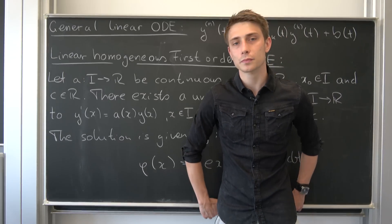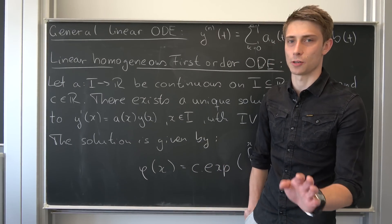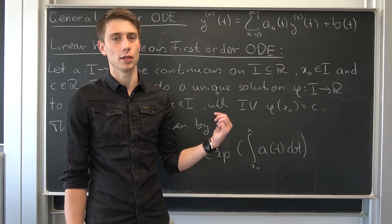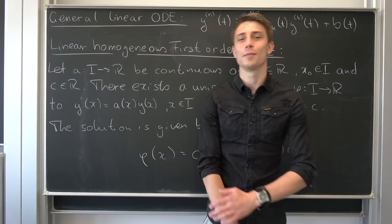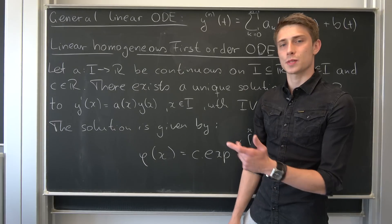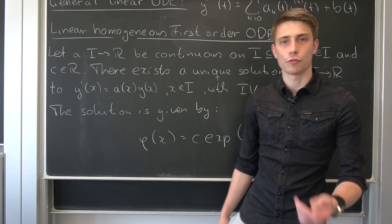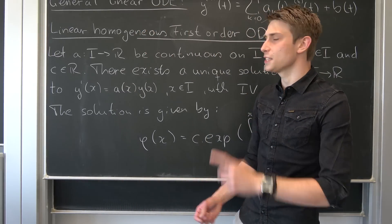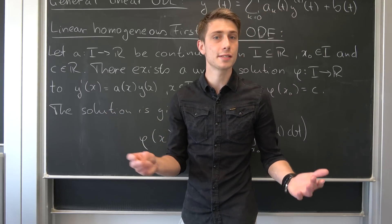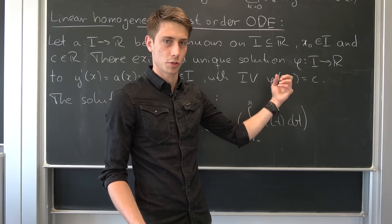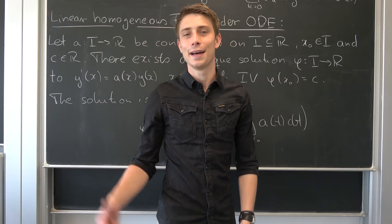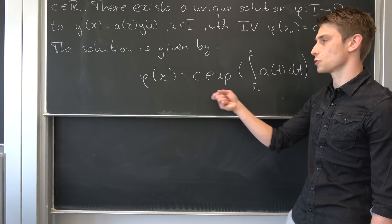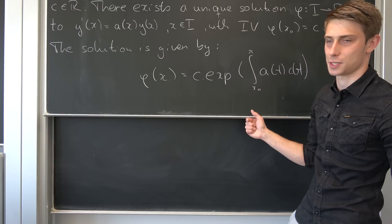Now let's take a look at the theorem. We have a function a going from some subset of the real numbers to the real numbers, and it's continuous. We also have some x₀ in that interval and some constant c in the real numbers. The theorem states that there exists a unique solution φ, which is differentiable, is a solution to the differential equation, and fulfills the initial value problem φ(x₀) = c. Those solutions are given by φ(x) = c · e to the power of an integral.